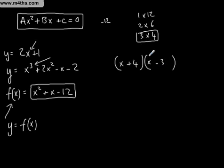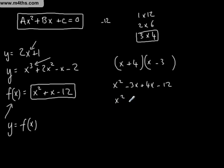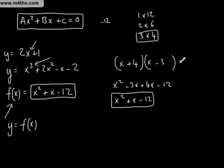If you want to check that that works, expand it back out: x² - 3x + 4x - 12. And you can see by collecting the terms in the middle, you get x² + x - 12. So that is now an expression. It becomes an equation when we set this to some value. Setting it to zero means we can now solve this.